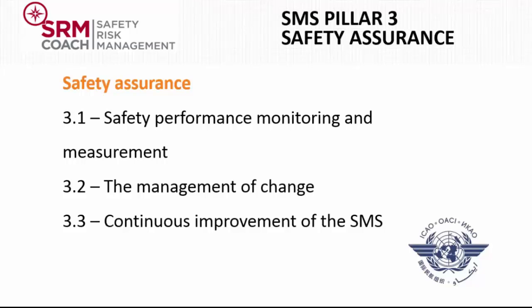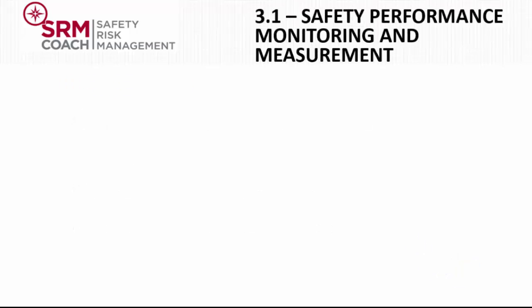While quality assurance typically focuses on compliance with regulatory requirements, safety assurance specifically monitors the effectiveness of safety risk controls. The complementary relationship between safety assurance and quality assurance allows for integration of certain supporting processes. Such integration can serve to achieve synergies to assure that the service provider's safety, quality, and commercial objectives are met. Safety assurance activities should include the development and implementation of corrective actions in response to findings of systemic deficiencies which have a potential safety impact. Organizational responsibility for corrective actions should reside with the departments cited in the findings.